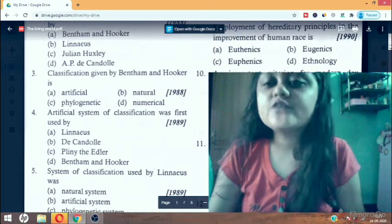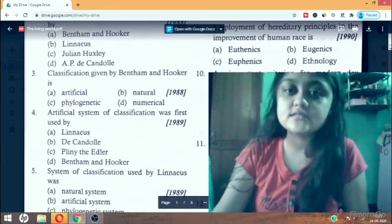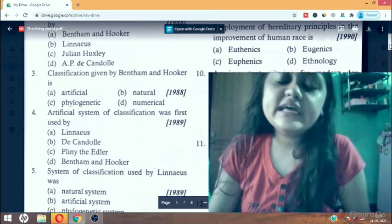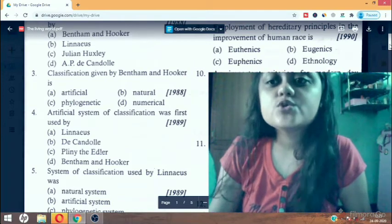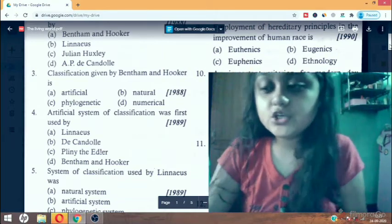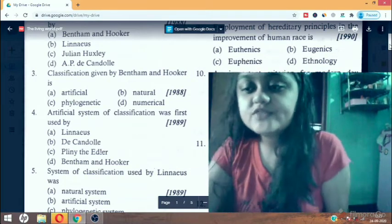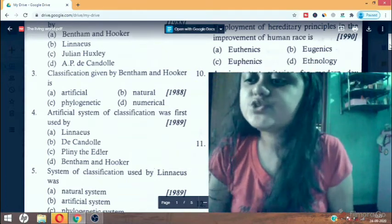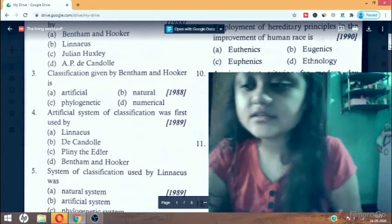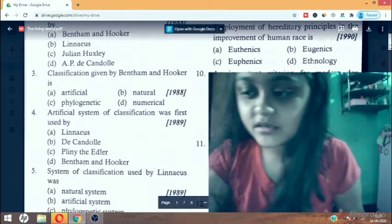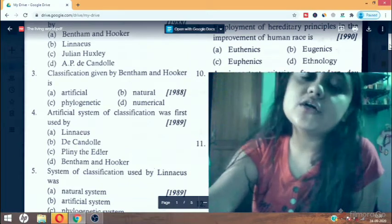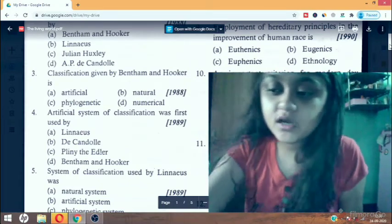Next question: employment of hereditary principles in the improvement of human races. The answer is B, eugenics. Eugenics is the science that deals with factors such as principle of genetics related to improvement of human race. Improvement of race is positive eugenics and if factors impair then it is negative eugenics.